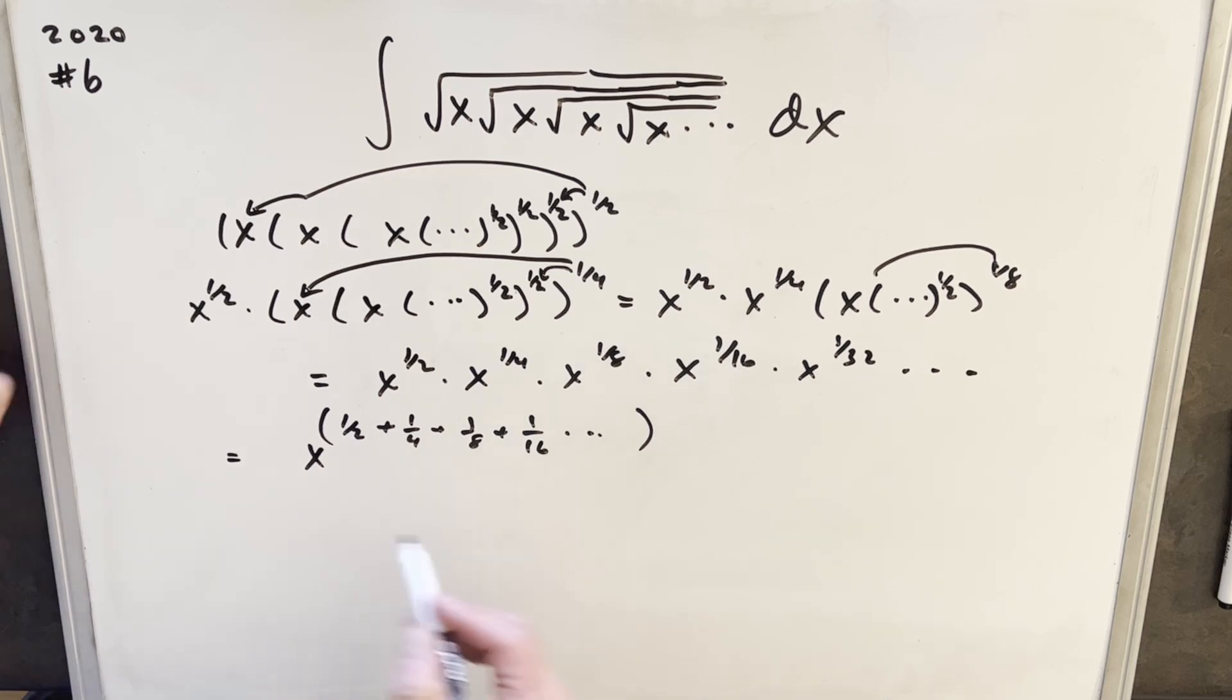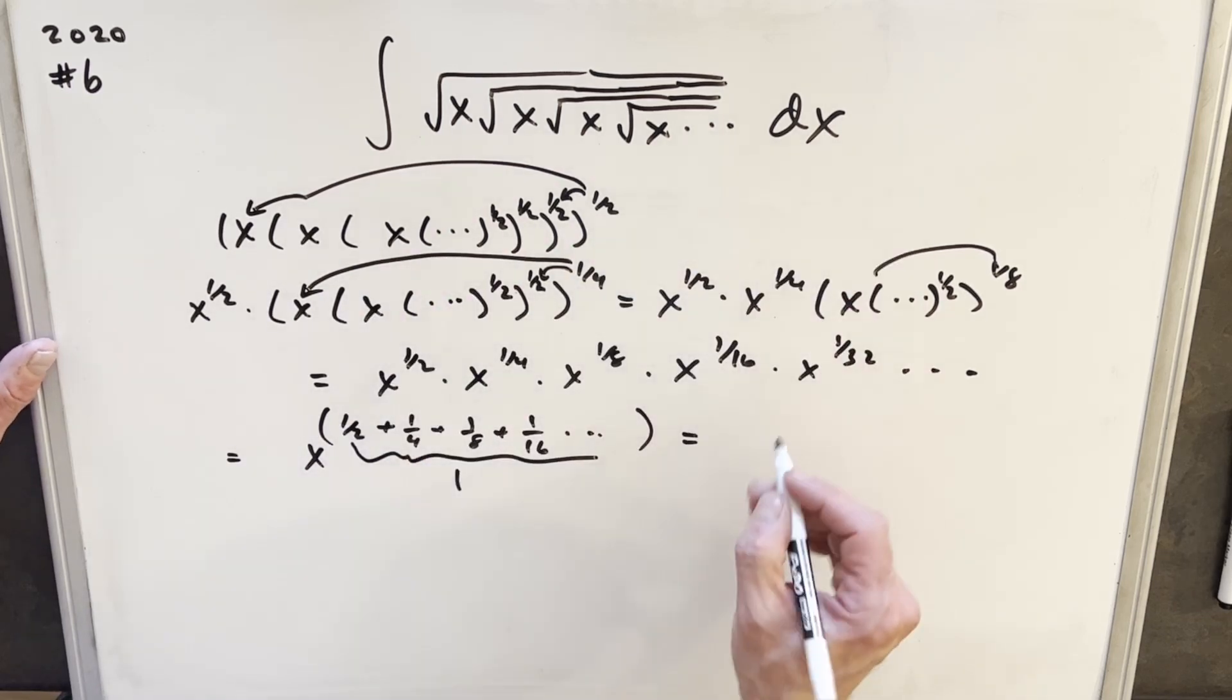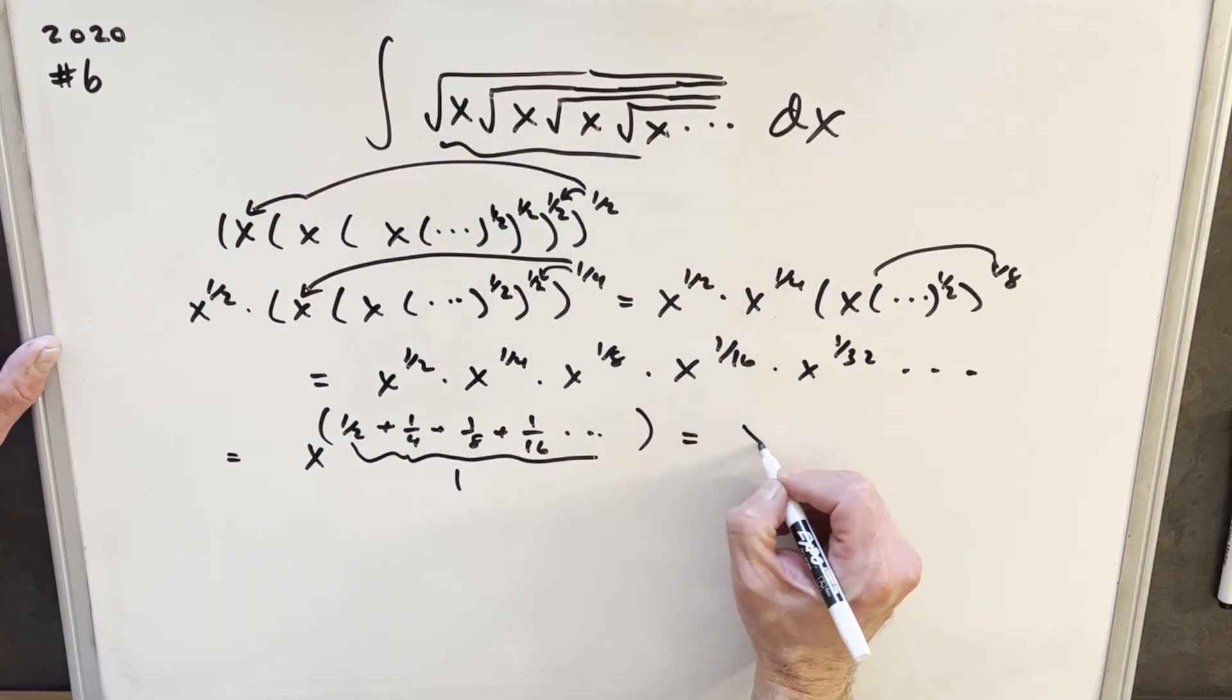Anyway, this is just a geometric series. And this is pretty common. So this whole thing, the value of this whole geometric series is just one. So then what this whole thing boils down to is this whole expression, this thing right here is just X.